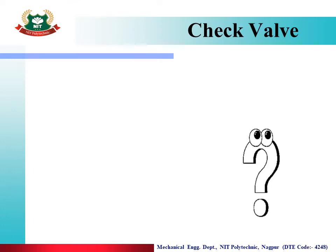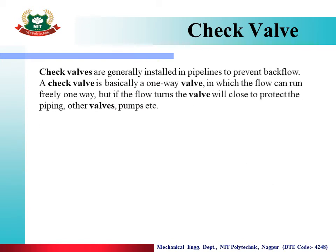Now let us see what is a Check Valve. Check valves are generally installed in pipelines to prevent backflow. A check valve is basically a one-way valve in which flow can run freely one way, but if the flow reverses, the valve will close to protect the piping, other valves, and pumps. So a check valve prevents backflow by allowing flow in only one direction.